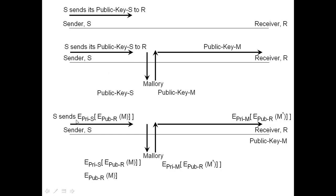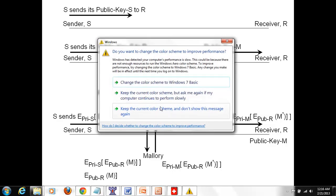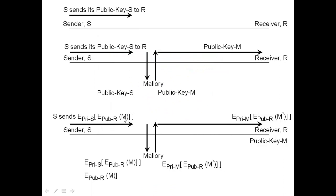Now S sends an encrypted message — it encrypts message M with the public key of the receiver, and the whole thing is further encrypted with the private key of the sender. This is one of the two ways I gave you. When this is sent, Malorie can capture this message. Malorie knows the public key of S, so Malorie can decrypt the outer level using the public key of S and get the inner one.